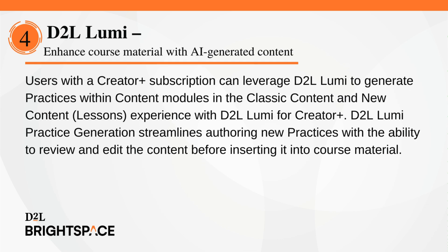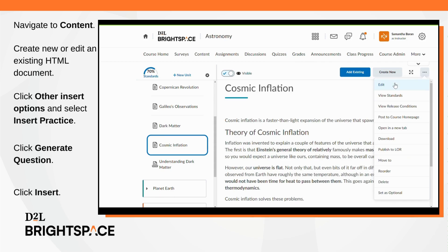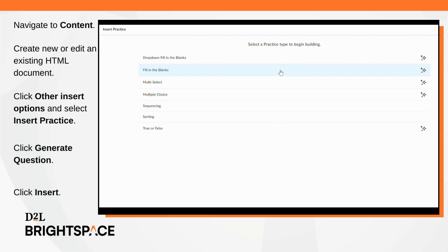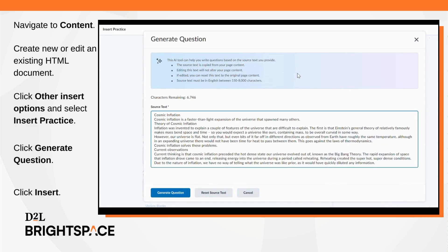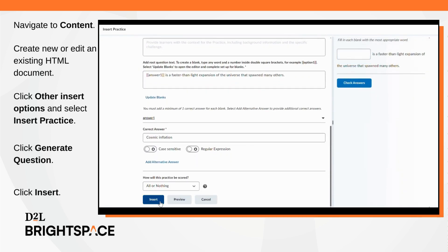Users with a Creator Plus subscription can leverage D2L Lumi to generate practices within content modules in the Classic Content and New Content Lessons experience. D2L Lumi Practice Generation streamlines authoring new practices with the ability to review and edit the content before inserting it into course material. In a content topic, create or edit an existing HTML document. Click Other Insert Options and select Insert Practice. Select an applicable practice indicated by the spark icon, click Generate Question, review the details of your practice, and then click Insert.